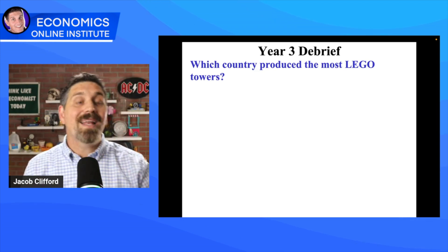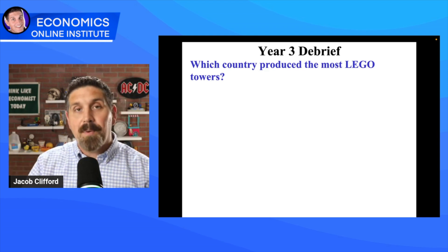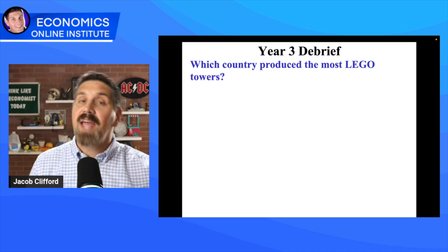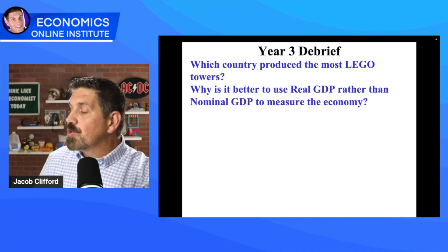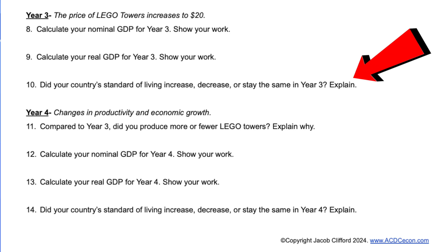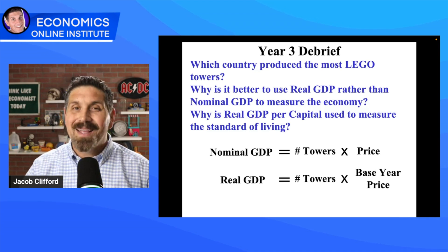The big concept here is for students to recognize the difference between nominal and real GDP. Nominal GDP is the new current price — $20 times the number of towers produced. Real GDP is the number of towers produced times the base year price of $10. Ask the question: why is it better to use real GDP rather than nominal GDP to measure the economy? Because real GDP adjusts for inflation. Have them connect this back to GDP per capita and standard of living. Make sure they show their work with the equations.